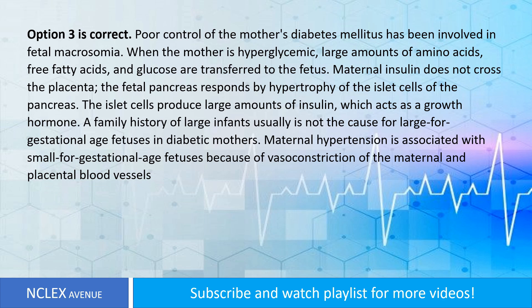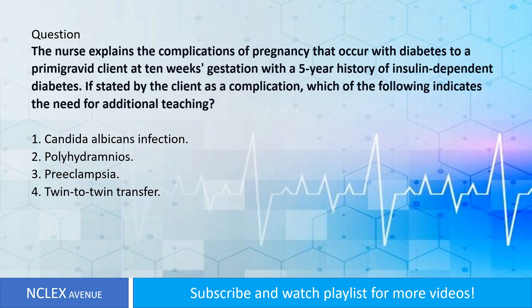Answer: Option three is correct. Poor control of the mother's diabetes mellitus has been implicated in fetal macrosomia. When the mother is hyperglycemic, large amounts of amino acids, free fatty acids, and glucose are transferred to the fetus. Maternal insulin does not cross the placenta. The fetal pancreas responds by hypertrophy of the islet cells, which produce large amounts of insulin that acts as a growth hormone. A family history of large infants is usually not the cause for large-for-gestational-age fetuses in diabetic mothers. Maternal hypertension is associated with small-for-gestational-age fetuses due to vasoconstriction of maternal and placental blood vessels.